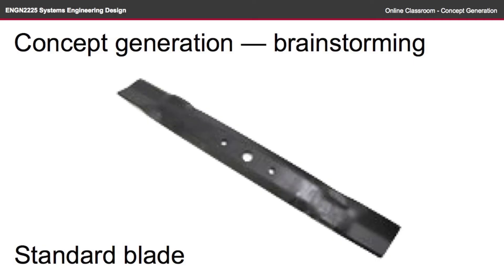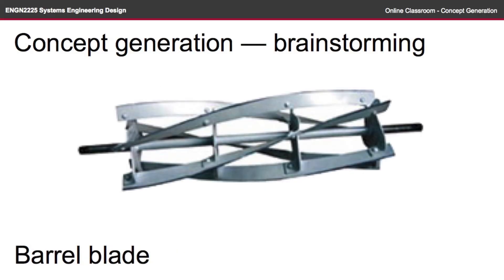So keep in mind, we're just looking at the cutting mechanism. The first idea is a standard blade from a normal lawnmower. Note that I'm not being too specific about the width or the size, because at this stage we're just trying to establish different types of concepts. The second idea is a barrel type blade, which you often see in push style lawnmowers. Push style lawnmowers are obviously a lot more difficult to manoeuvre, but they might actually satisfy the noise requirement better than any other idea.